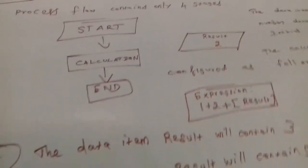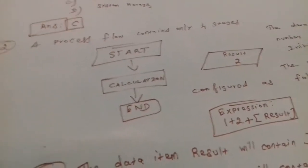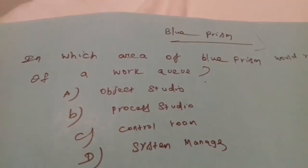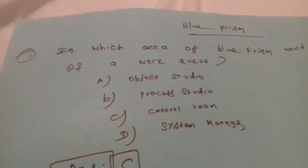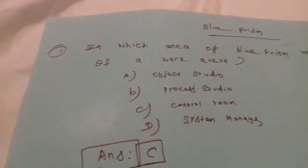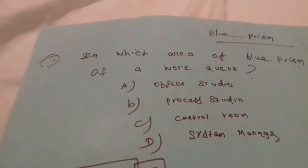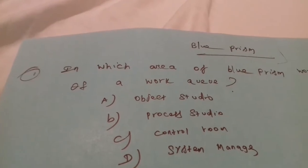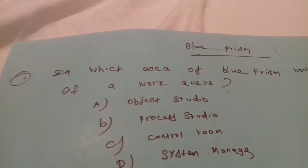Hi everyone, today we are going to discuss some basic things of Blue Prism. In which area of Blue Prism would you monitor the content answer or queue? You can check: Object Studio, Process Studio,